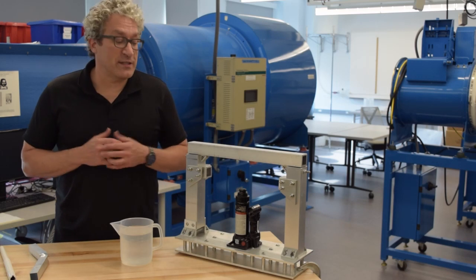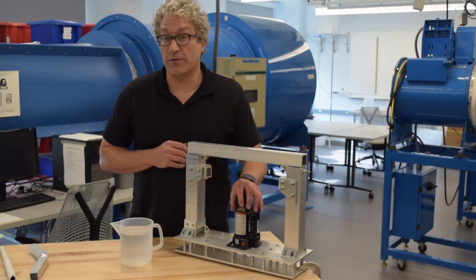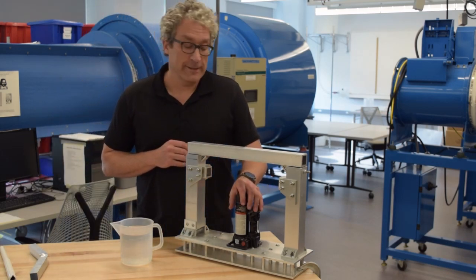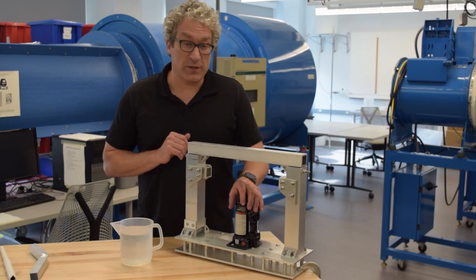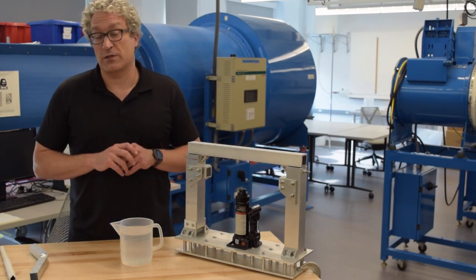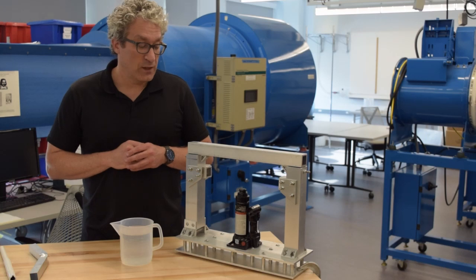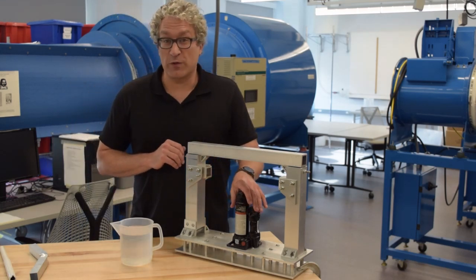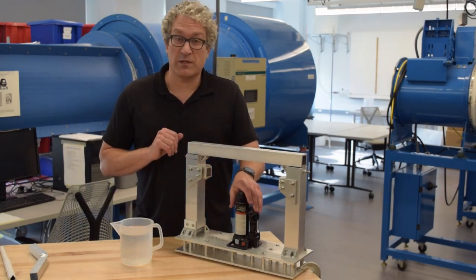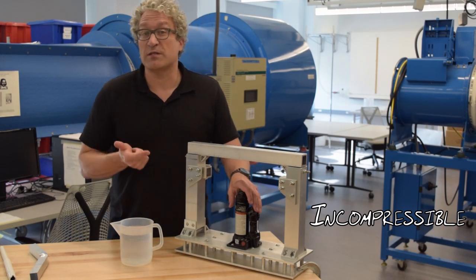So nothing about this analysis actually took into account the properties of the fluid inside this hydraulic jack. None of our equations have properties of the fluid. In fact, it mostly doesn't matter what the fluid is. We just need it to be a fluid. However, there's a specific reason why we use oil, and that's because we want the system to be incompressible, and we want the system to be a good lubricant.